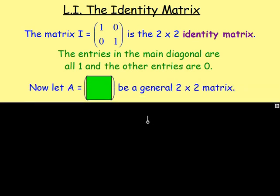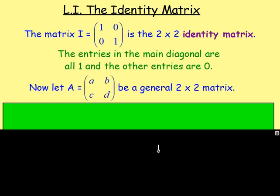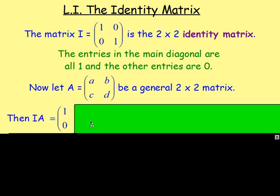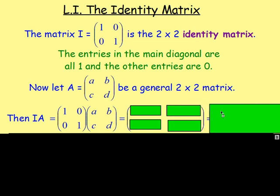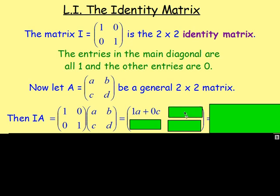Let's say we've got some other matrix, matrix A. Let that be just a general 2x2 matrix, so we're going to have 4 entries — let's just call them A, B, C and D. What we can do is take the identity matrix and multiply it by matrix A. The identity matrix is 2x2, matrix A is 2x2, so we can multiply them together. The result will also be a 2x2 matrix. To work out the entry in the first row and first column, we multiply the first row by the first column — so we'd have 1 times A and 0 times C.